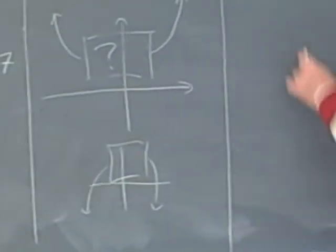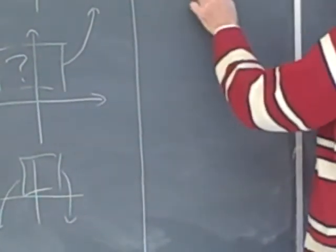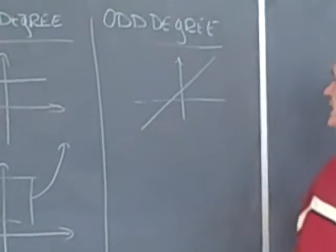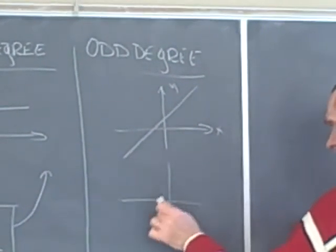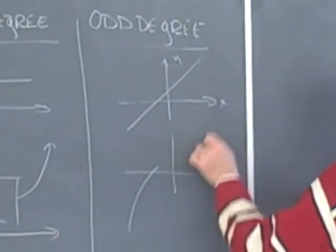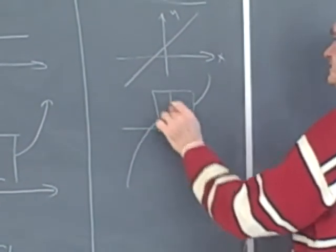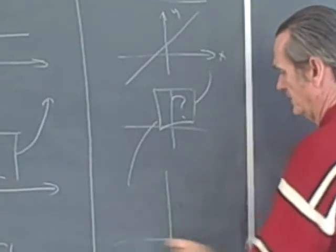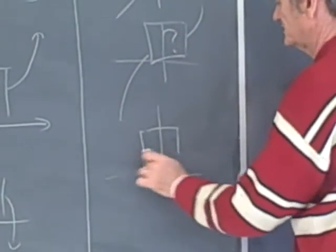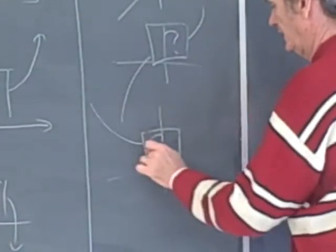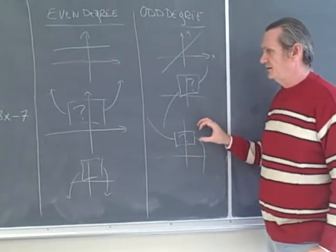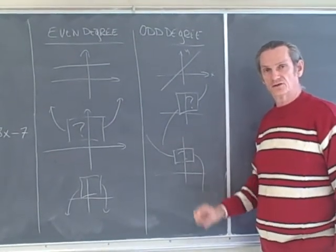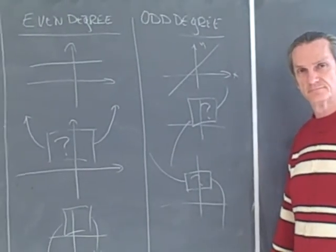And for the odd degree polynomials, well, for example, if we have a straight line, that would be an odd degree polynomial. You can have the function on average is always increasing or always decreasing, but that's an average behavior. And in the next video, we're going to discuss the short-term behavior of the polynomial, how we can determine that. Just like that.